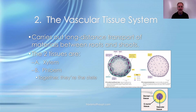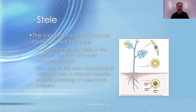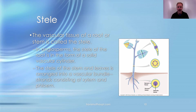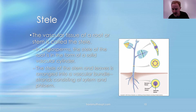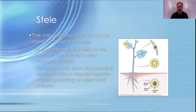The vascular tissue system carries out long-distance transport of materials between roots and shoots. The two types are xylem and phloem, and together they make up the stele — the vascular tissue of the root or stem. In an angiosperm or flowering plant, the stele forms a solid cylinder in the root, while in stems and leaves it's arranged in vascular bundles, varying slightly between monocots and dicots.